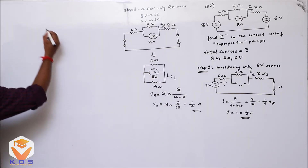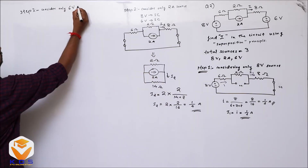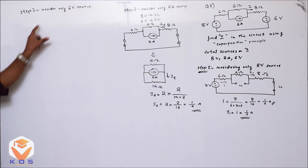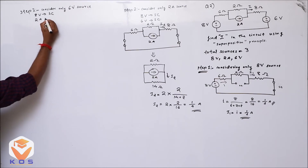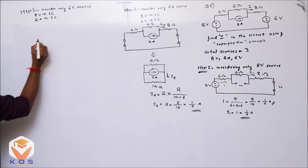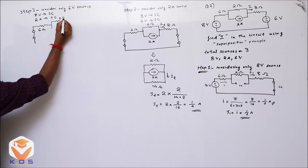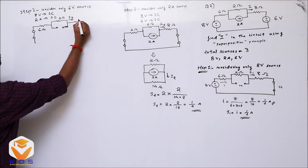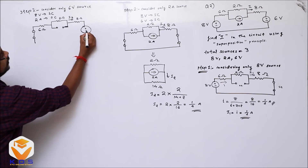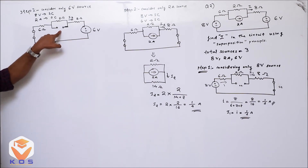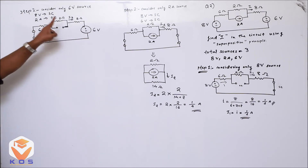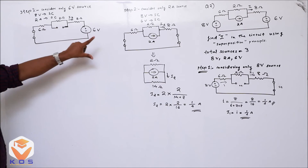Step 3: Consider only the 6V source. The 8V source is short-circuited and the 2A current source is open-circuited. The circuit has a 6 ohm, 2 ohm, and 8 ohm resistor in series with the 6V source. We label this partial current I3.